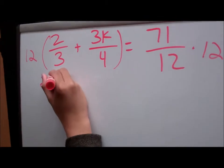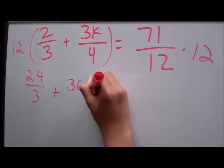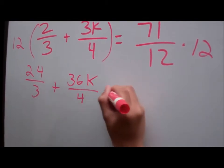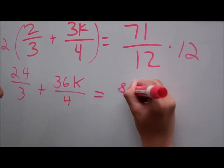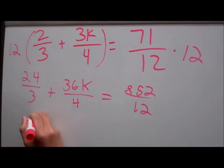As you can see, 12 is the LCD. Now he's using the distributive property. So, 12 times 2/3, and 12 times 3k/4, and 12 times 71/12. Now he's going to divide it.